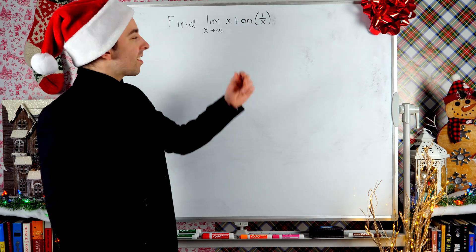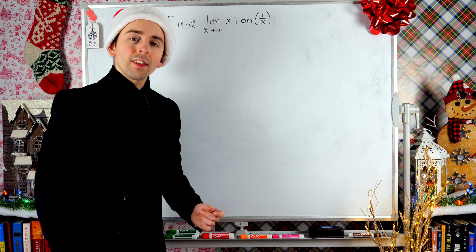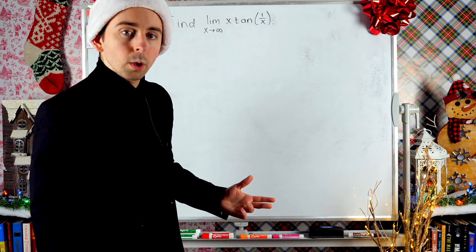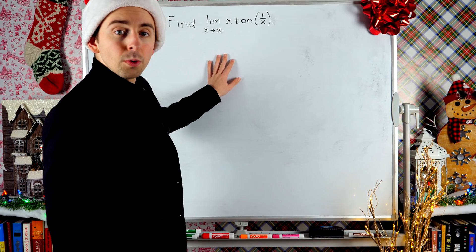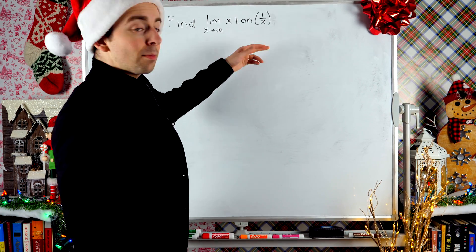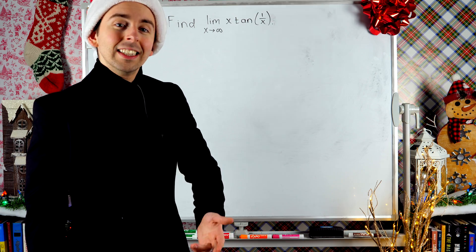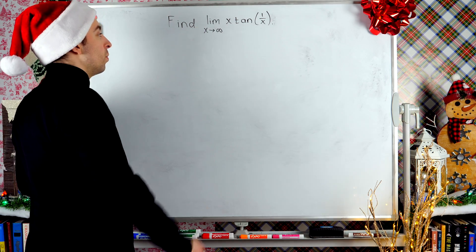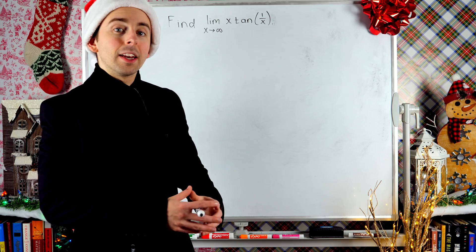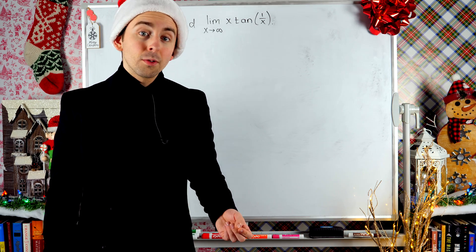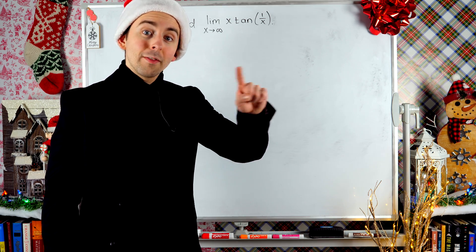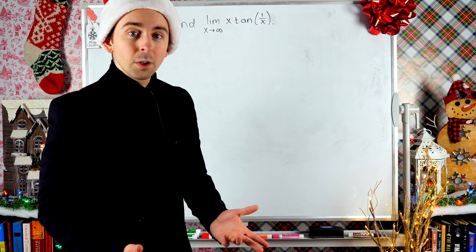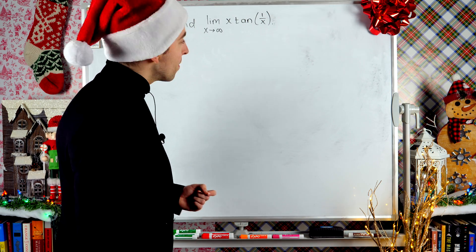We've got x times tangent. Your first thought might be to try using the limit product rule — to split this into the limit of x times the limit of the tangent. That's not going to work here though, because x is going to infinity. The limit of x as x goes to infinity is just infinity, and we can't use the product rule when we've got an infinite limit.